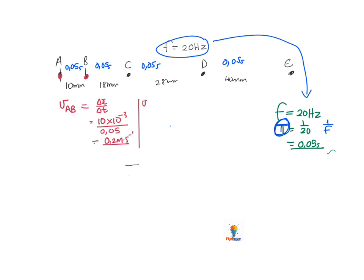Then I'm going to use the same formula to find the velocity between B and C. Between B and C, the displacement is 18, so 18 times 10 to the minus 3 to convert to meters, and the time from B to C is 0.05 seconds. Putting that into our calculator, we get an answer of 0.36 meters per second.